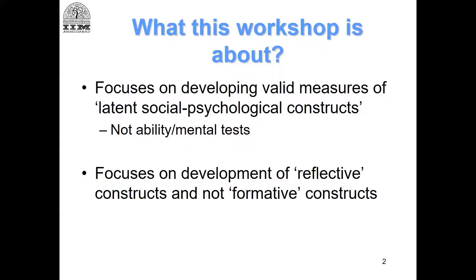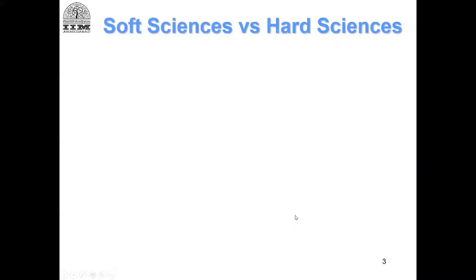Now, soft sciences versus hard sciences. There is a very popular saying in psychology: 'God gave all the easy problems to physicists and all the difficult problems to psychologists.' This is not to say physicists aren't doing great work, but the point is that psychology and social sciences in general are very difficult because we are working with phenomena and issues that are very abstract and very difficult to truly understand.